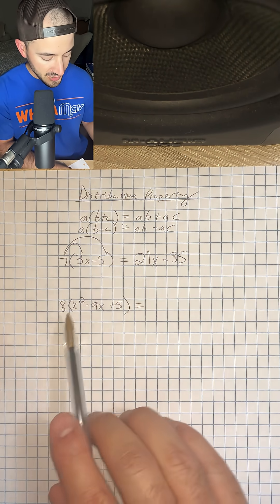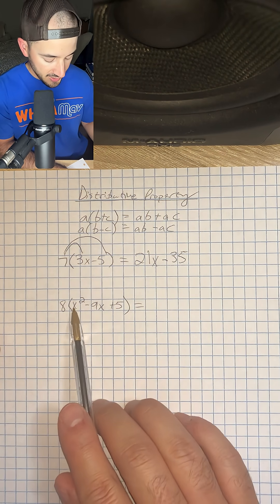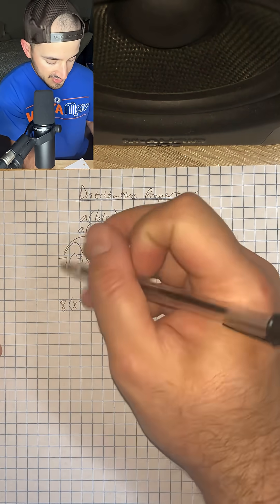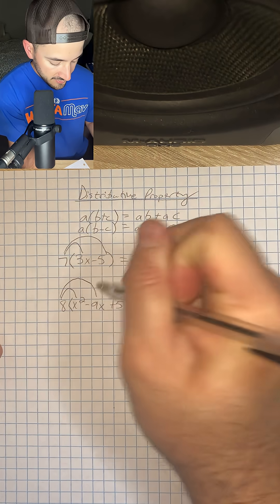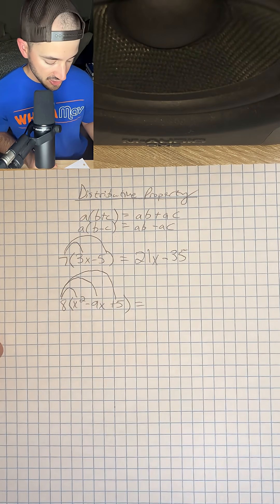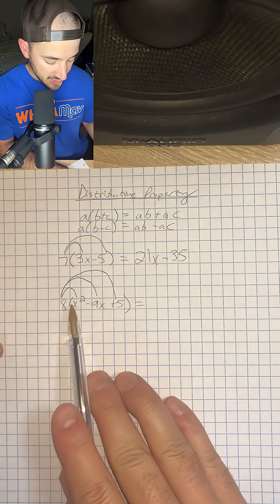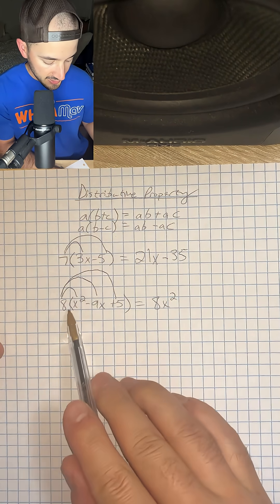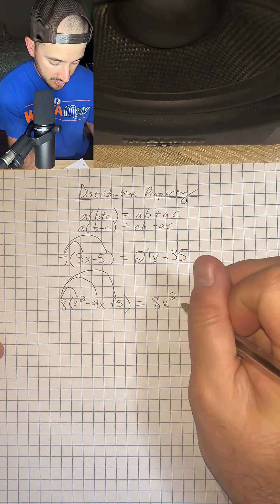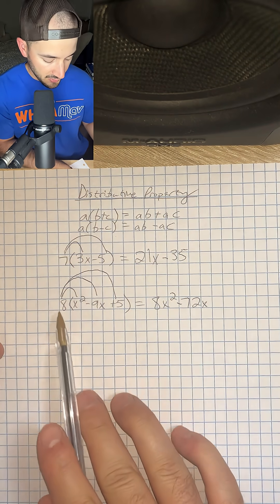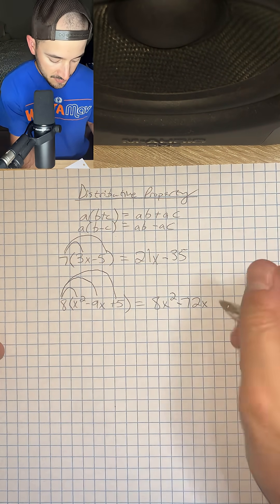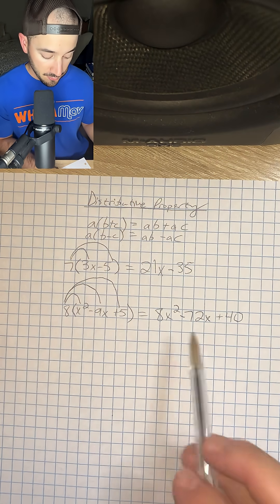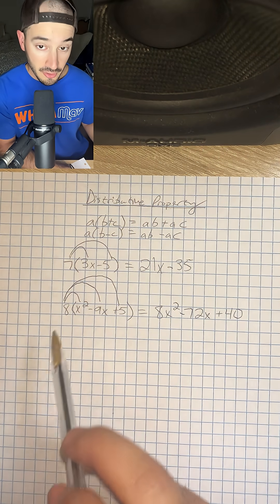All right, let's do one more. We have 8 times parentheses x squared minus 9x plus 5. Same thing, we're going to distribute our 8 to every term, and we're going to get 8 times x squared, which is 8x squared, 8 times negative 9x, so negative 72x, and then 8 times 5, which is positive 40, so plus 40. And that would be our expression after we distribute our 8.